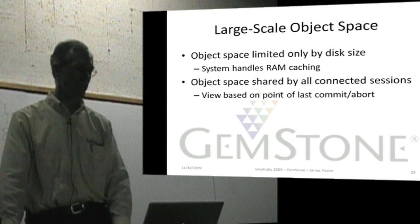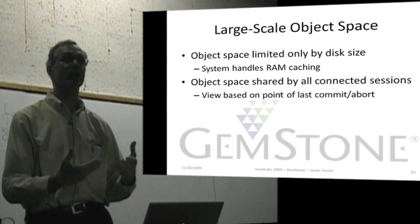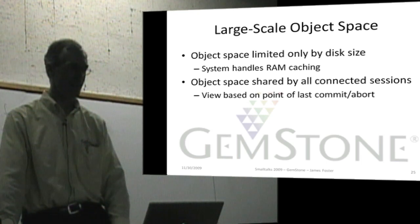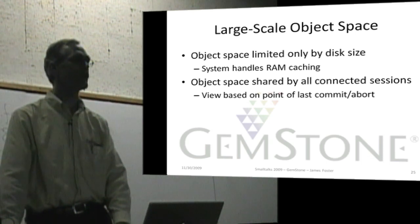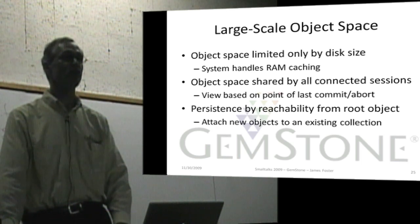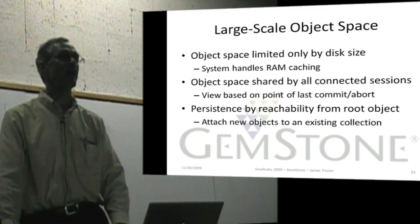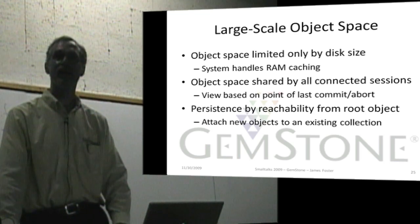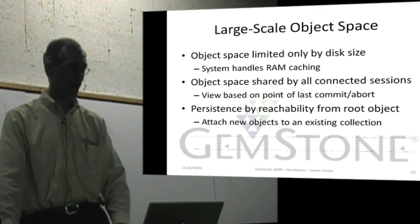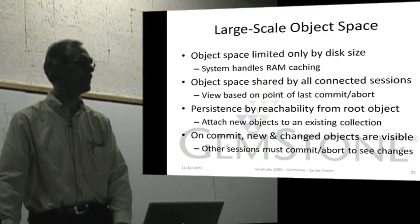With GemStone, you are limited by the size of disk, you can have multiple sessions, and the object space is shared amongst all sessions. But your view is on a transactional basis and is isolated — the point of your last commit or abort gives you your current view. Like traditional Smalltalks, reachability from a root object applies: when you attach an object to a persistent object — generally by adding it to an existing collection — then commit your transaction, it will be visible to other sessions. On commit, new and changed objects are visible, and when other sessions commit or abort, they will be able to see your changes.